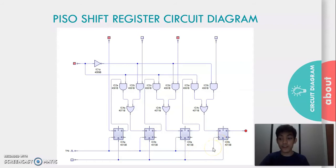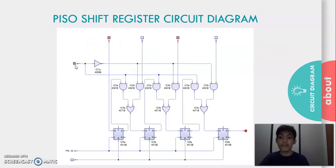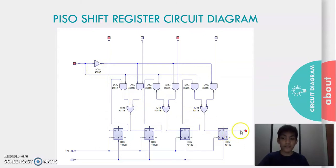In this shift register, we can apply the parallel inputs to each D flip-flop by making the serial input to 1. For every positive edge triggering of the clock signal, the data shifts from one stage to the next, so we will get the serial output from the rightmost D flip-flop.